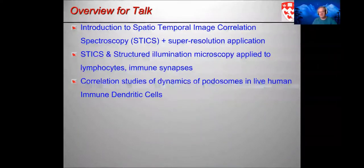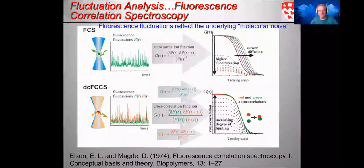One involves combination of super resolution imaging, looking at actin dynamics in lymphocytes, and studying aspects of organization of artificial immune synapses in the lymphocytes. Secondly, I'm going to present a range of correlation spectroscopy analysis on dynamic podosomes in live human immune dendritic cells. I will highlight the collaboration partners for their important contributions in actually driving this work.